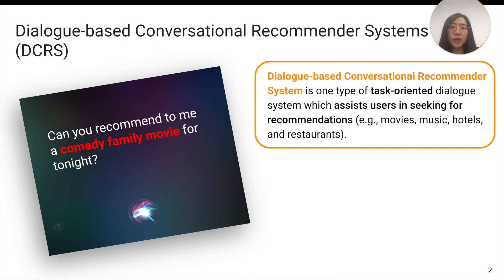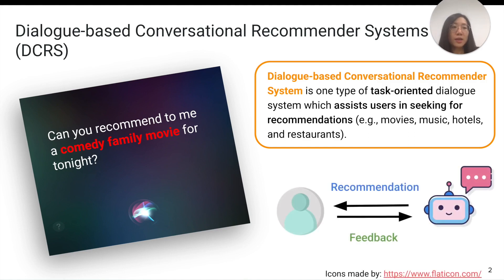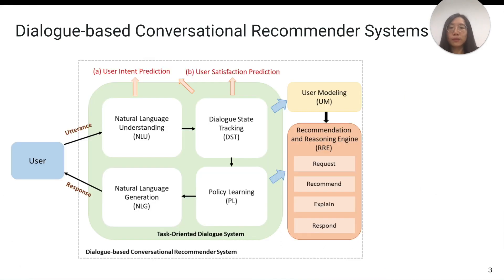Compared to traditional recommender systems, this kind of system can interactively obtain users' feedback on recommendations. This figure shows the framework of this type of dialogue system. The system needs to understand the user's utterance, check their current state, and then select the appropriate action to respond to the user in natural language.